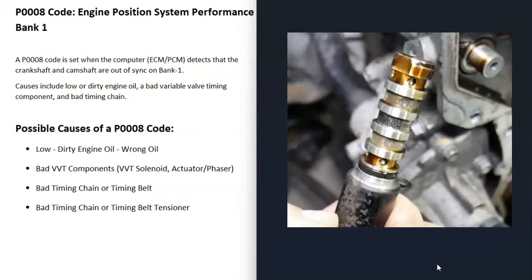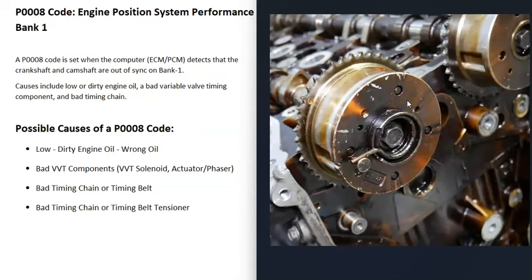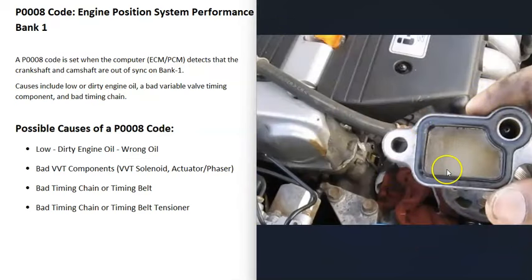The next thing that could cause this is a bad component inside the variable valve timing. This includes things like the variable valve timing solenoid or a bad actuator, sometimes called a phaser. Oil flows through all these components, which is why if the engine oil is low or really dirty it could cause issues. Often there are small screens inside that can get clogged up when the engine oil is dirty — it can vary depending on the engine.